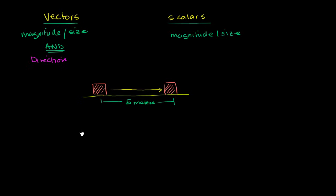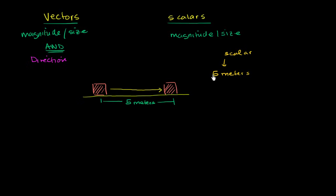So my question to you: is my measurement of five meters a vector or a scalar? Well, if I just tell you five meters, you just know the size of the movement — you just know the magnitude of the movement. So if someone were to just say five meters, this is a scalar quantity. And when we're referring to moving something, or how much something has changed its position, and I don't give you the direction, we're talking about distance.